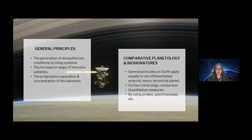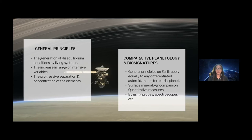We now have a clearer picture of Earth's mineral evolution and how those processes might be the key driving forces of life. How does this tie into life detection outside of Earth? We want to understand the mechanisms of mineral evolution that happen here on Earth and relate that to other terrestrial bodies. These general principles apply equally to any differentiated moon, asteroid, and terrestrial planet. We can compare the surface mineralogy of a planet or moon with Earth's through quantitative measures using probes, spectroscopes, and more to judge whether a terrestrial body is a good candidate for the search of life.